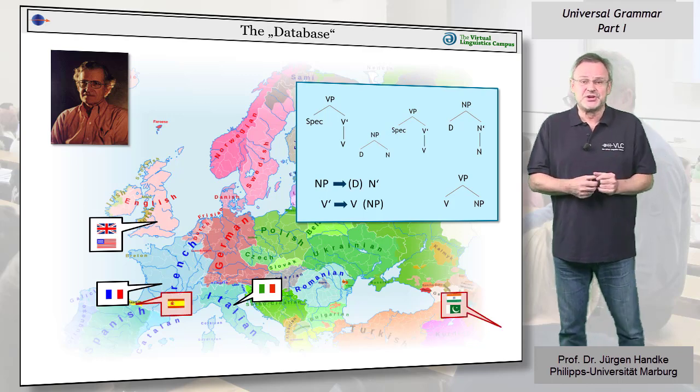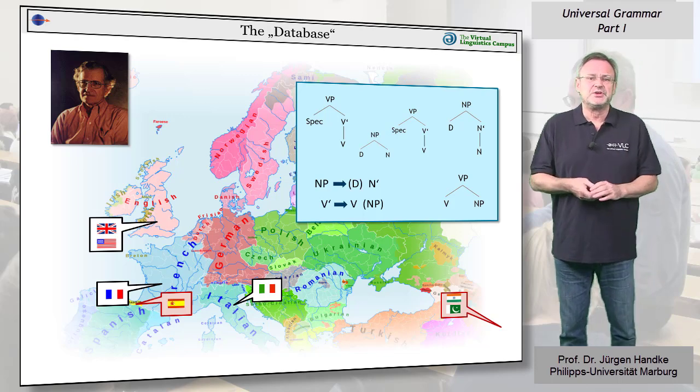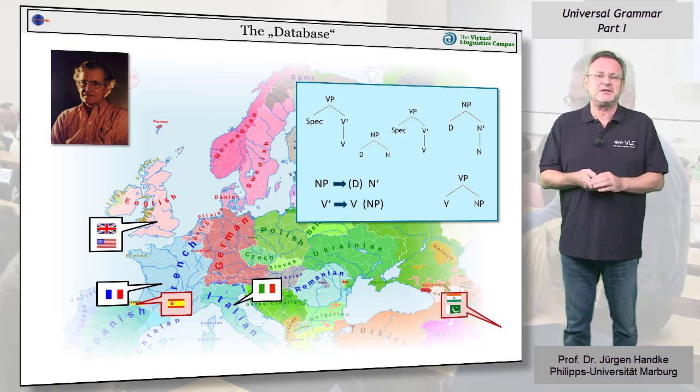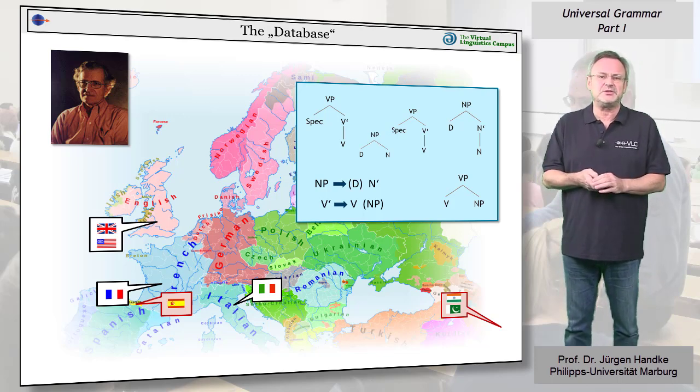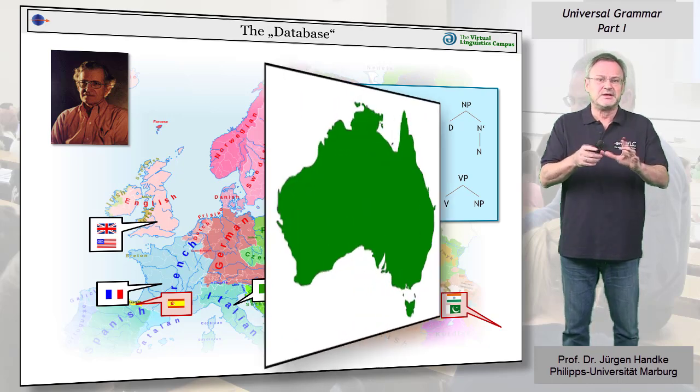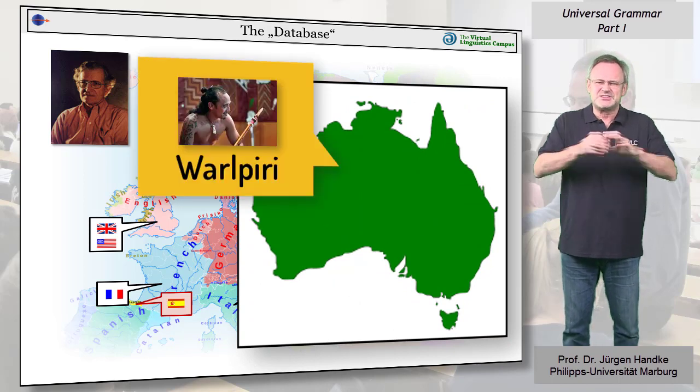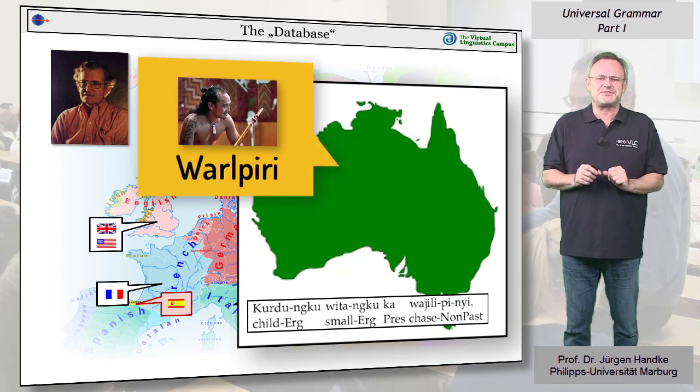Ergative languages, such as Basque and Urdu, for example, use sentence subjects in a way that is unlike that in many European languages. Additionally, native Australian languages, such as Walpiri, scatter noun and verb phrases throughout the sentence.